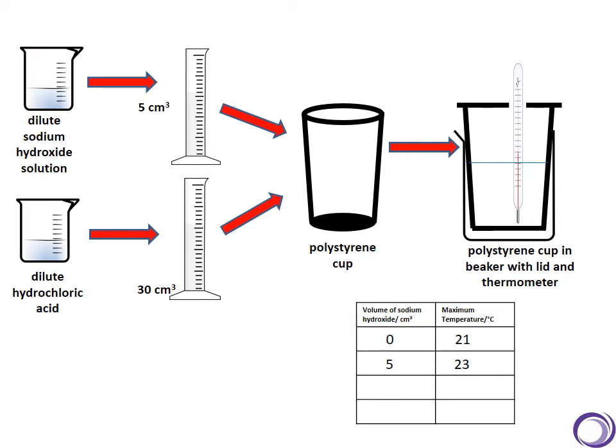So when I added five centimeters cubed, this time I'm going to say that the temperature reached about 23 degrees centigrade. I would then carry on and I would repeat the experiment, adding more centimeters cubed of sodium hydroxide, five centimeters cubed each time, so that each time my total volume that I've added has gone up five centimeters cubed.